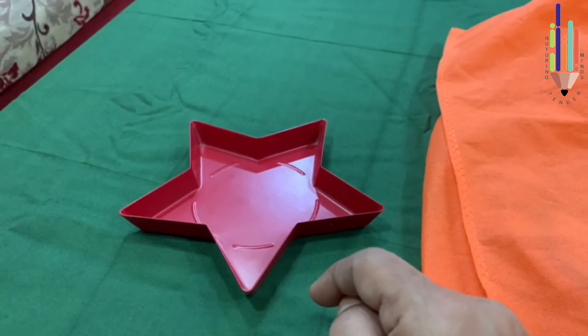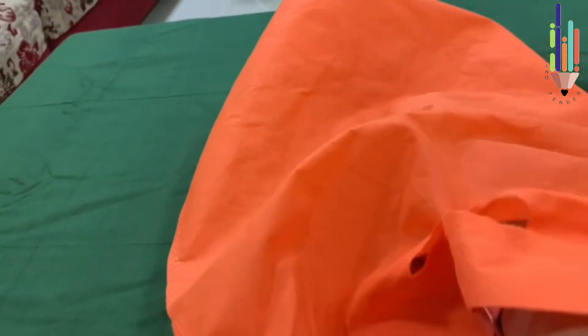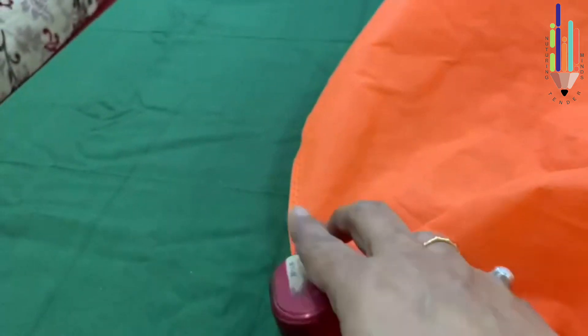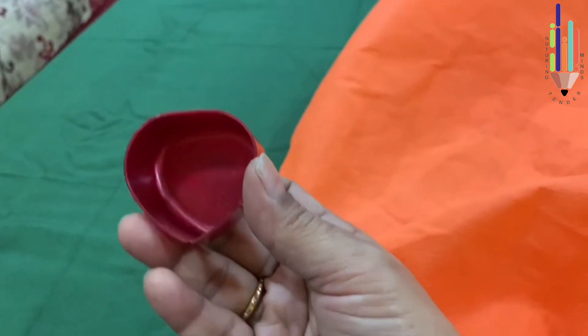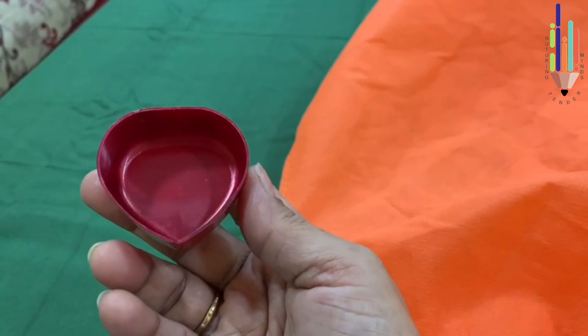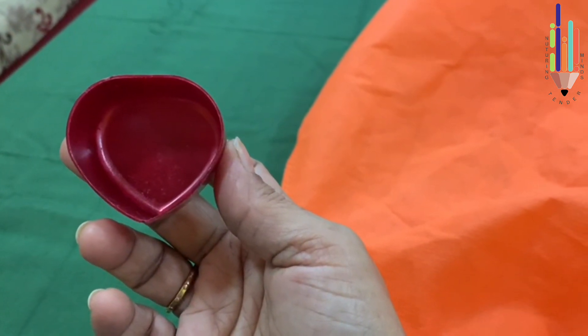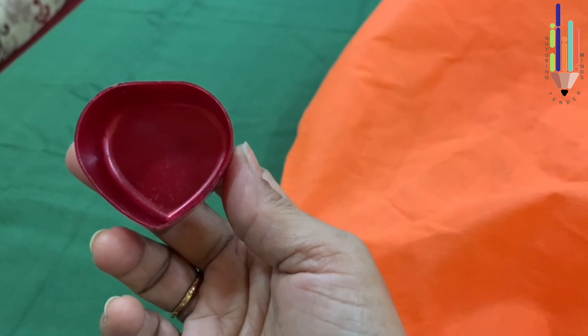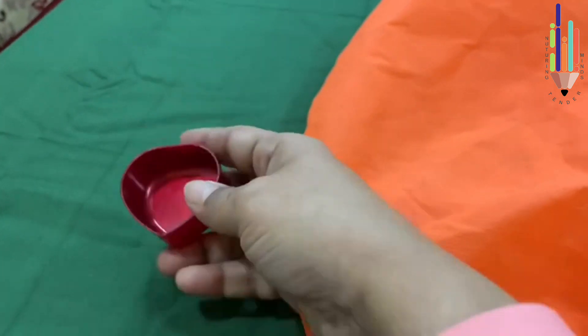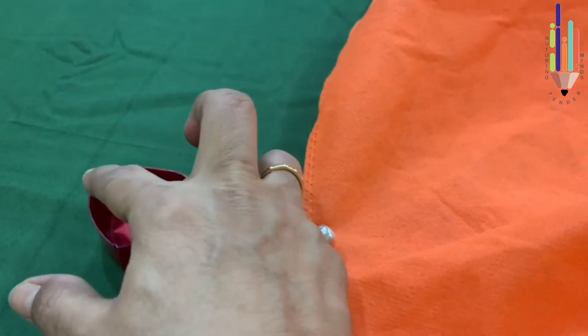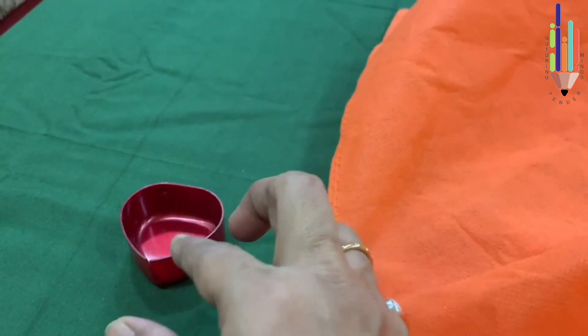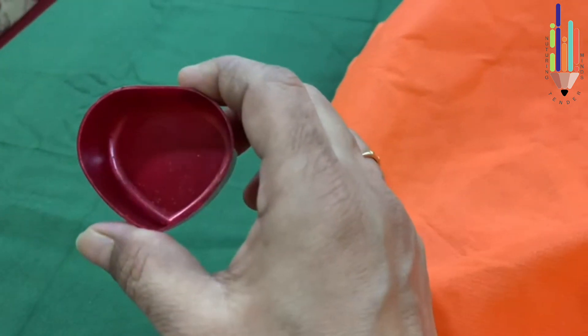Now I put my hand again into the bag. What did I get here? This is the cover of a box. What shape is this? This is a heart shape and it is red in color. It is circular from up and comes down straight.